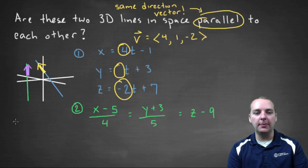So let's do that real quick. So we'll have x minus 5 over 4, we'll set that equal to a parameter t. Solve for x. You'll have x equals 4t plus 5.